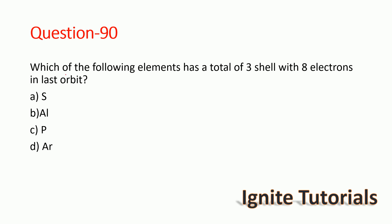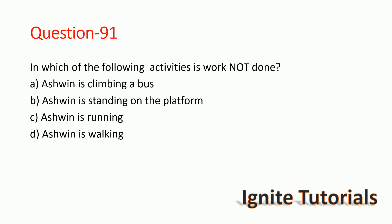Question 89: Which element has a total of three shells with eight electrons in the last orbit? The correct answer is argon — argon has three shells with eight electrons in the outermost orbit.